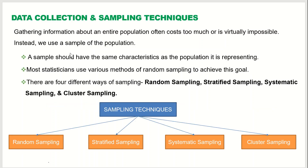Data collection and sampling techniques: gathering information about an entire population often costs too much or is virtually impossible. Instead, we use a sample of the population. Whenever we want to collect data about anything, we will not be able to go to the entire population, so what we do is select a sample or subset of the population to study about that population.